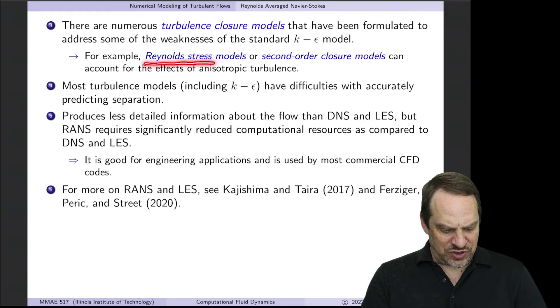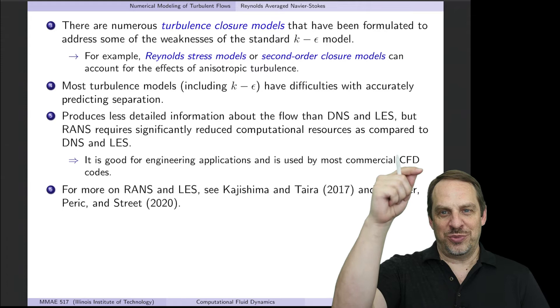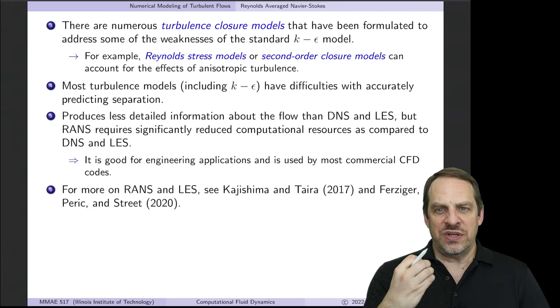Just to mention a couple classes of models, there's Reynolds stress models, second-order closure models. The one I showed you, k-epsilon, is a first-order closure model. There's just an endless supply. If you look in commercial software, you pull down the turbulence model menu and the list just gets longer and longer every version.